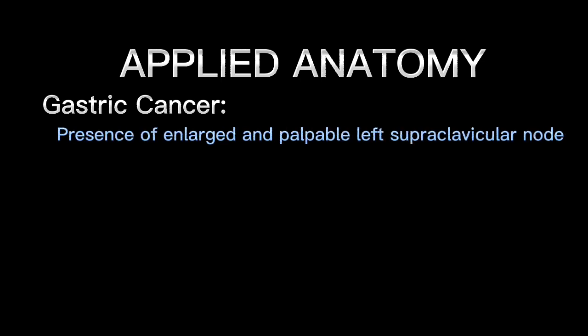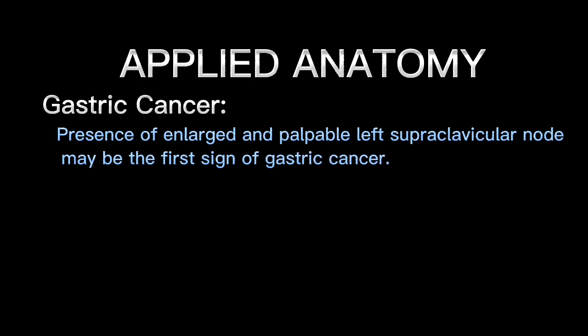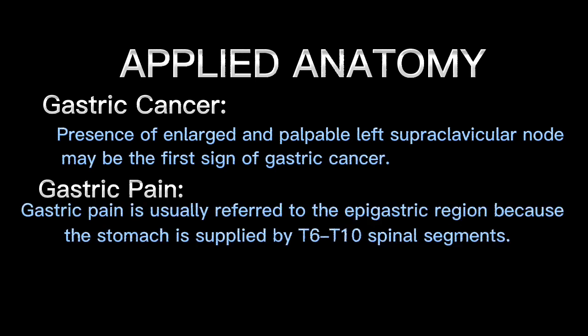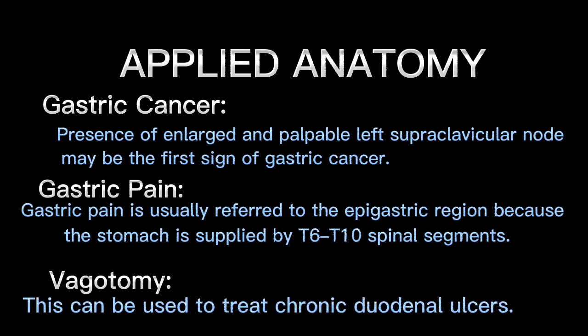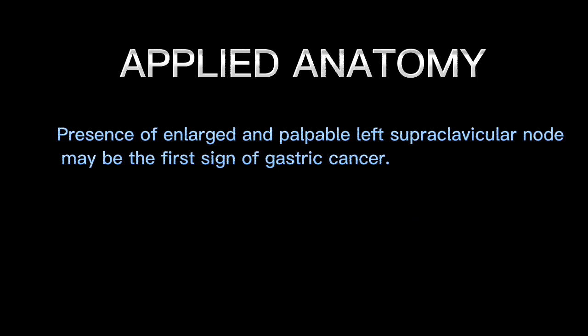Applied anatomy. Gastric cancer: the presence of an enlarged and palpable left supraclavicular node may be the first sign of gastric cancer. Gastric pain is usually referred to the epigastric region because the stomach is supplied by T6–T10 spinal segments. Vagotomy can be used to treat chronic duodenal ulcers.